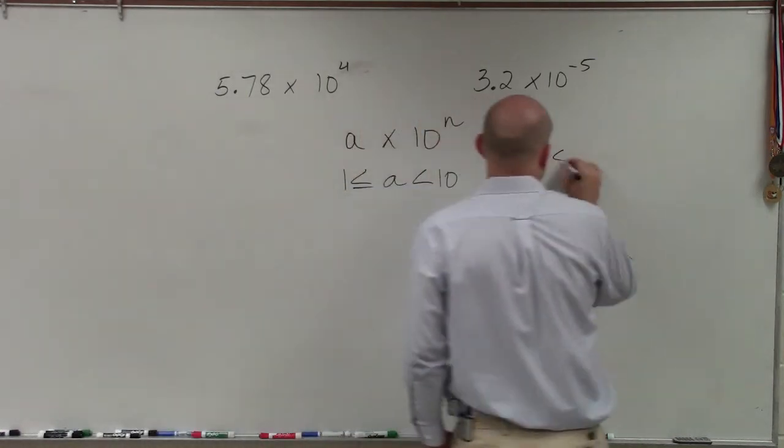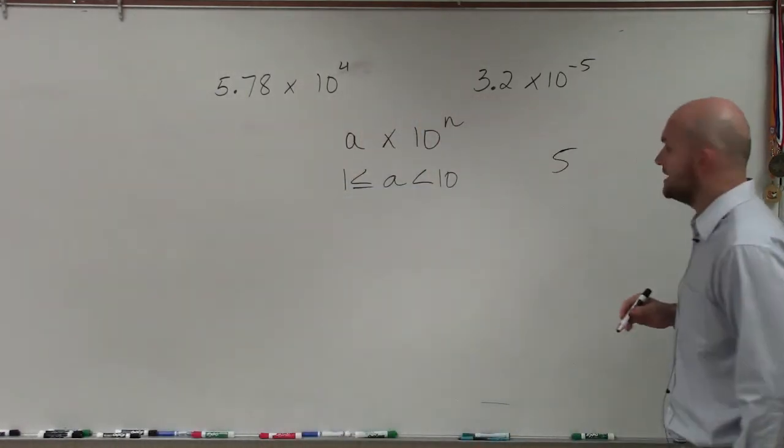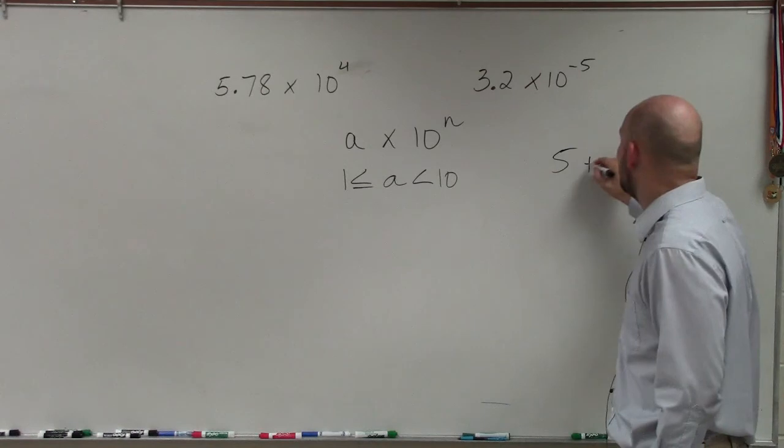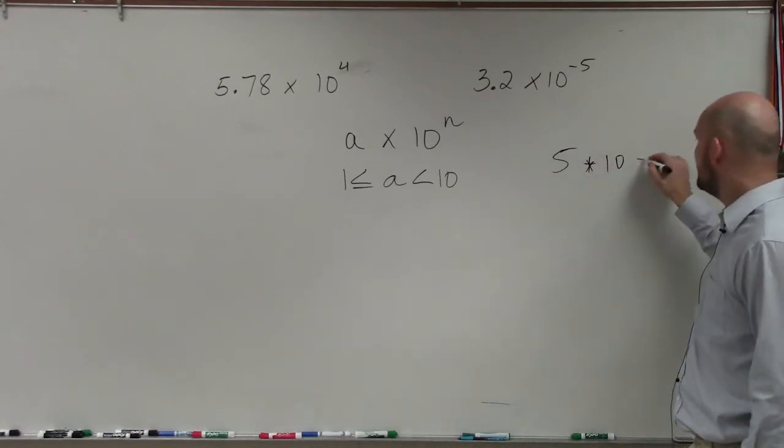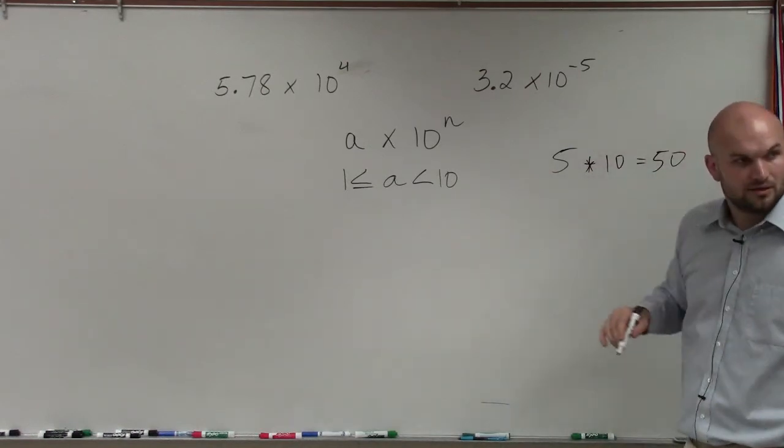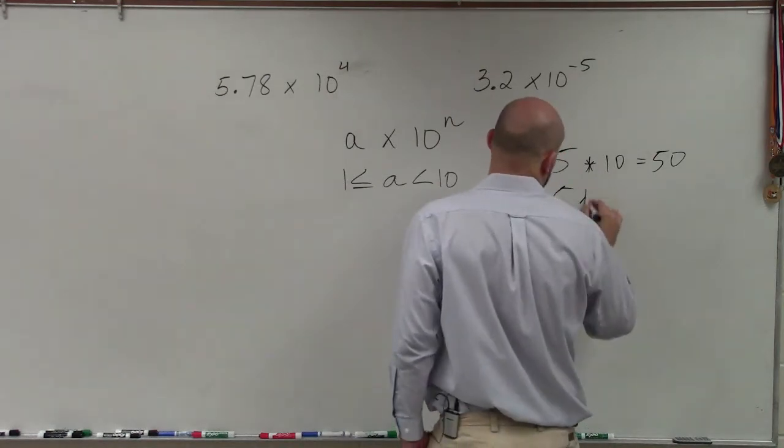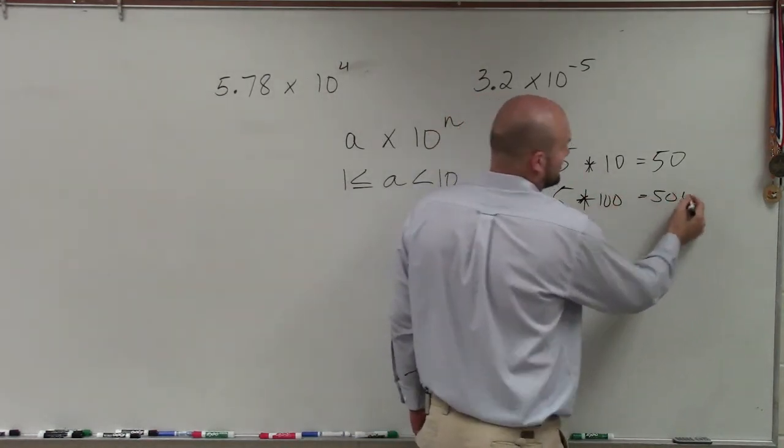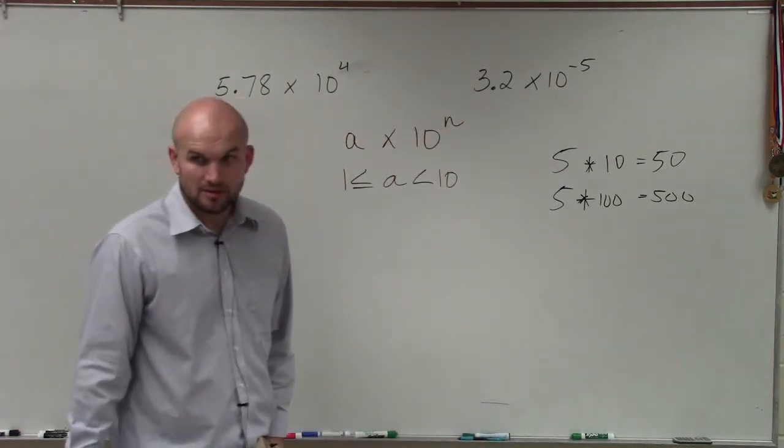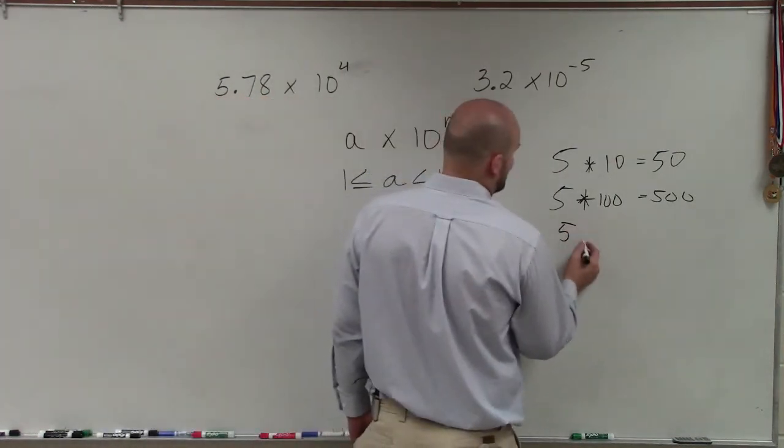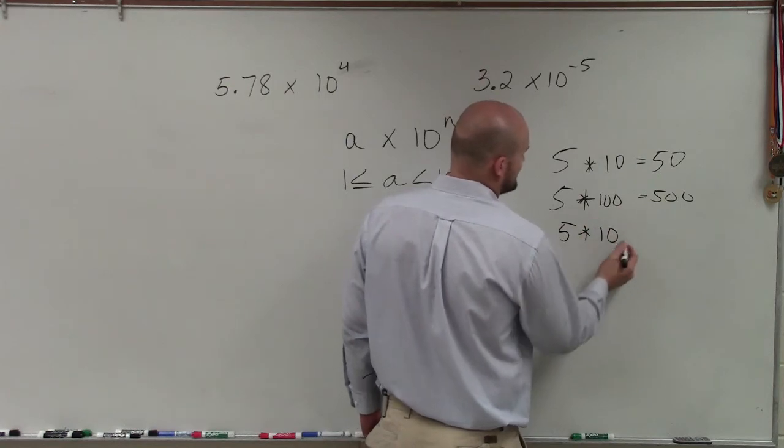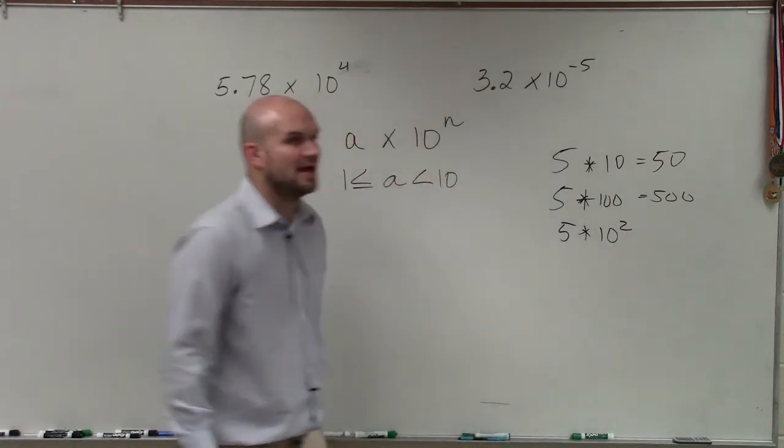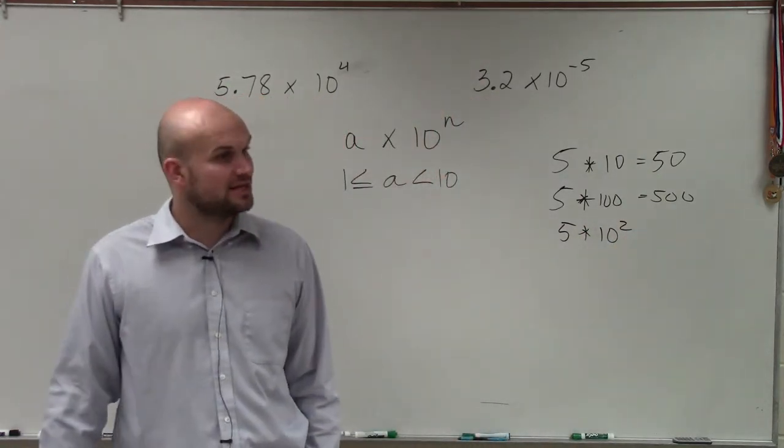Now, when you guys think about this, early into your days of mathematics, when you said 5 times 10, we know that just gave us 50, right? And when we did 5 times 100, you just added the zeros at the end, correct? Does everybody follow me? So this is just a very easy way for us to be able to say that is the same thing, because 10 squared is 100.